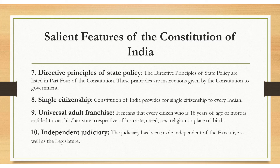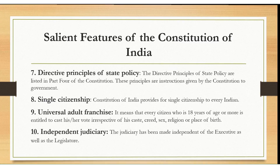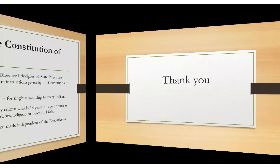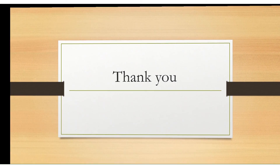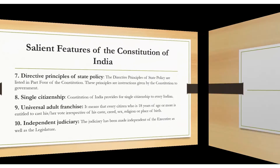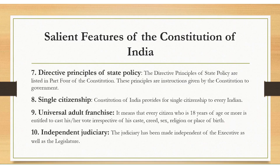The ninth point is universal adult franchise. It means that every citizen who is 18 years of age or more is entitled to cast their vote, irrespective of caste, creed and sex, religion and place of birth.